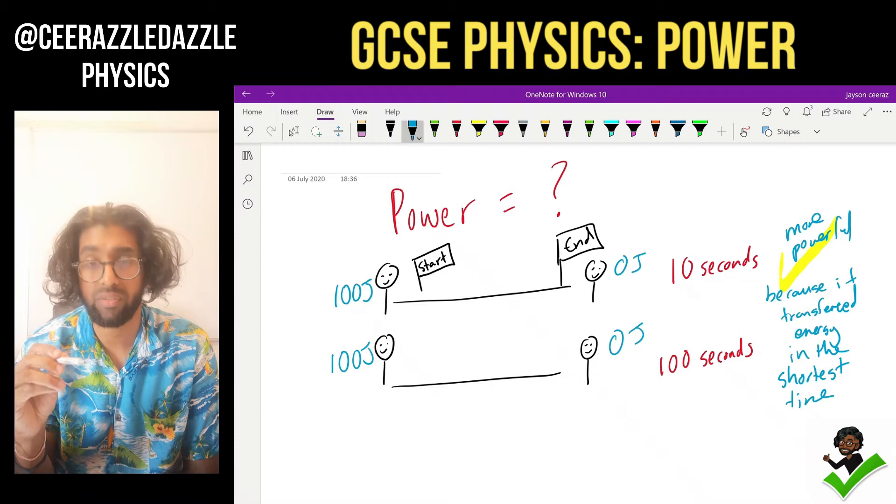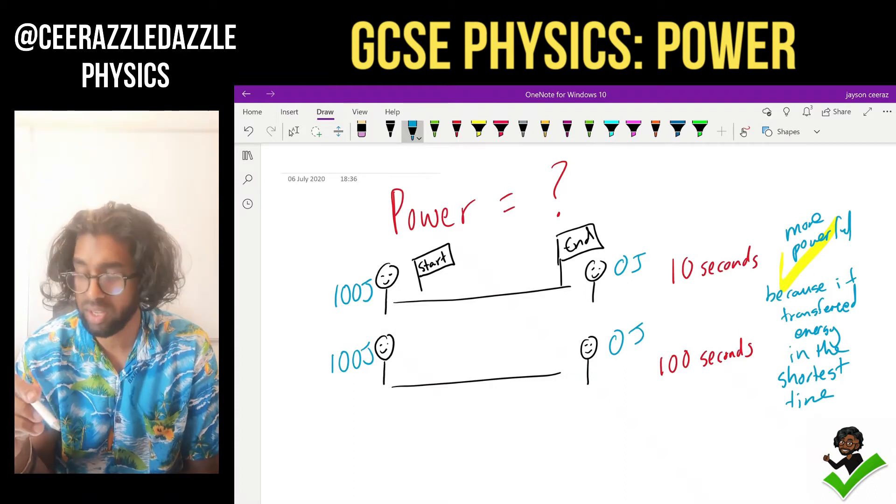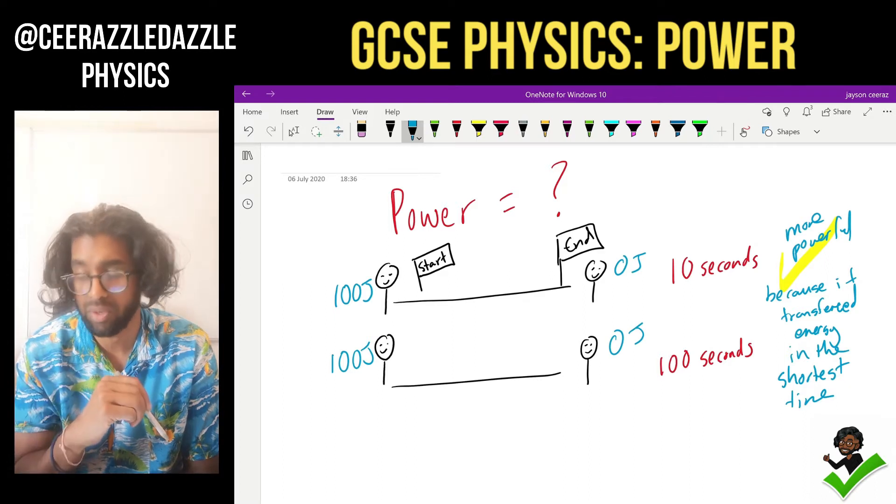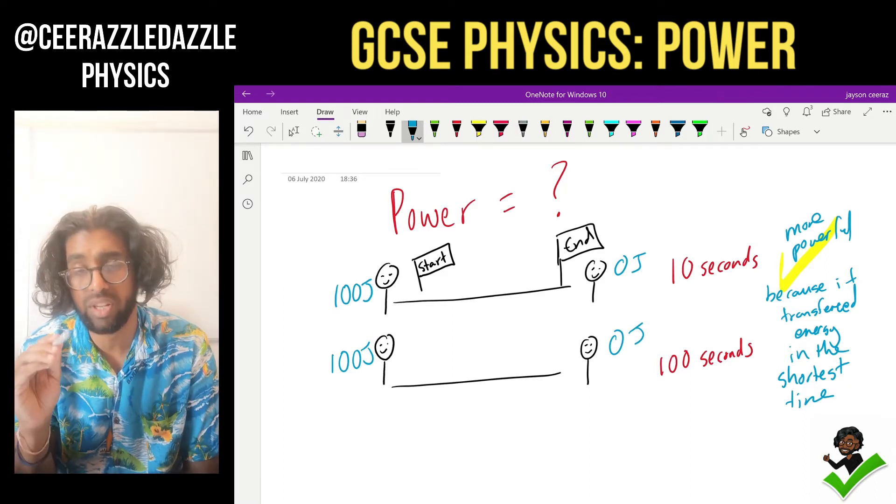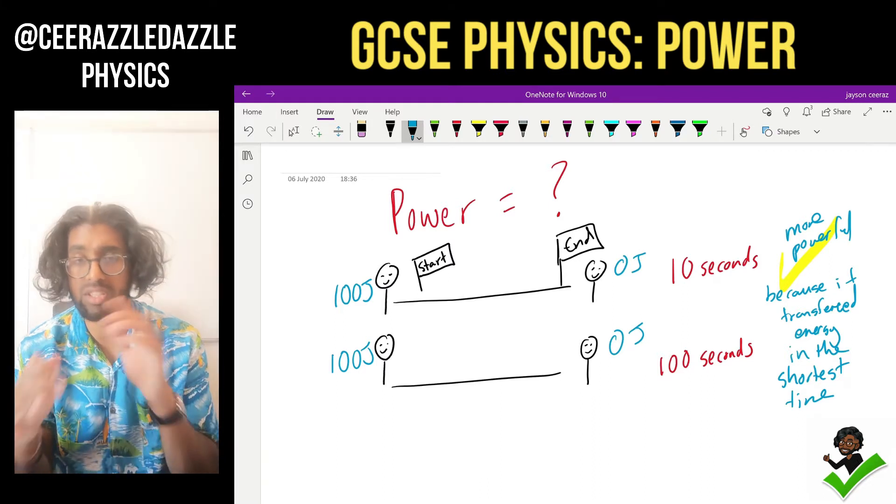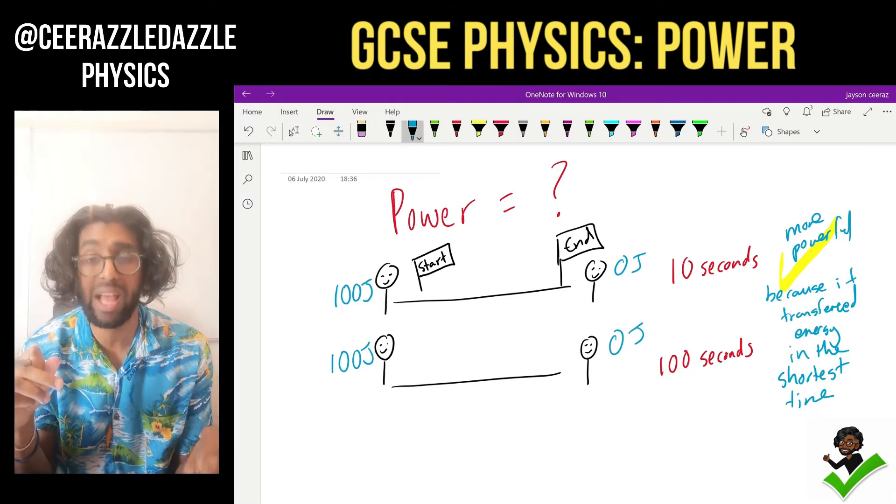So we have concluded that the first one is more powerful. The reason why is because it transferred energy in the shortest amount of time. Or you can say it transferred energy at a higher rate. This is going to lead us to our definition of what power actually is.